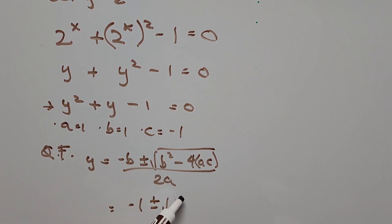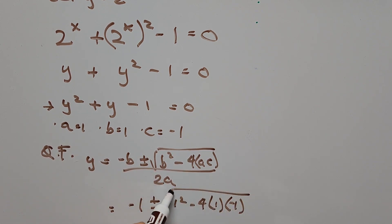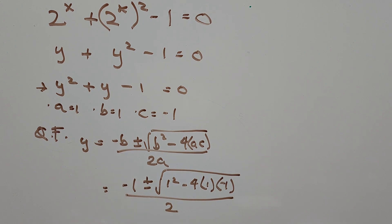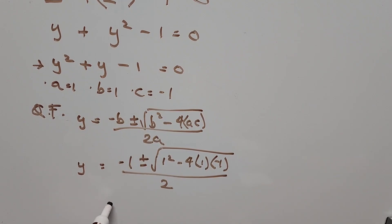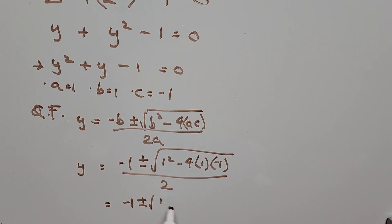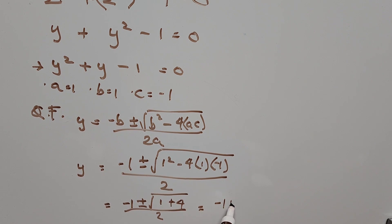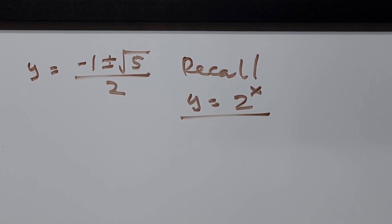The denominator is 2. Simplifying, we have negative 1 plus or minus the square root of 1 squared, which is 1, minus 4 times negative 1, which gives positive 4, all divided by 2. Simplifying further, we have negative 1 plus or minus the square root of 1 plus 4, which is 5, all divided by 2. So that's the value of y.